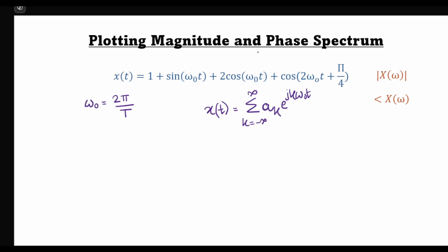Looking at x(t) again, we see that it has the fundamental frequency ω₀. There are two terms corresponding to ω₀, one harmonic which is the second harmonic given as 2ω₀, and the 0th harmonic, also known as the average value or DC value, which is equal to 1.